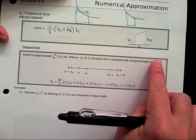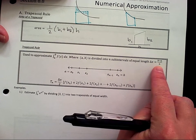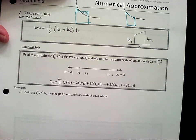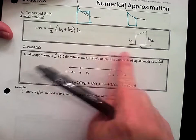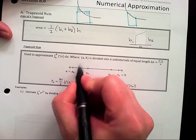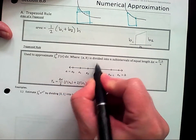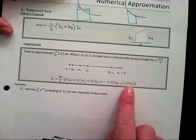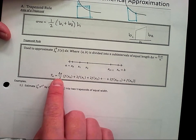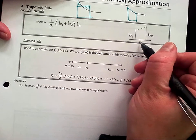Delta x is b minus a over n. Let me see if I printed it out. I thought I had printed out the derivation. But if you work out the formula, if you do a trapezoid here, a trapezoid here, a trapezoid here, this is the formula you would get, where delta x is your height.